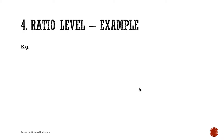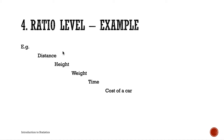Examples of ratio level measurements include distance, height, weight, time, and cost. Zero distance means you did not move anywhere — an absolute absence of distance. Zero height means a complete absence of height. Zero time with someone means an absolute absence of time. A cost of zero means it is free — that is an absolute zero.